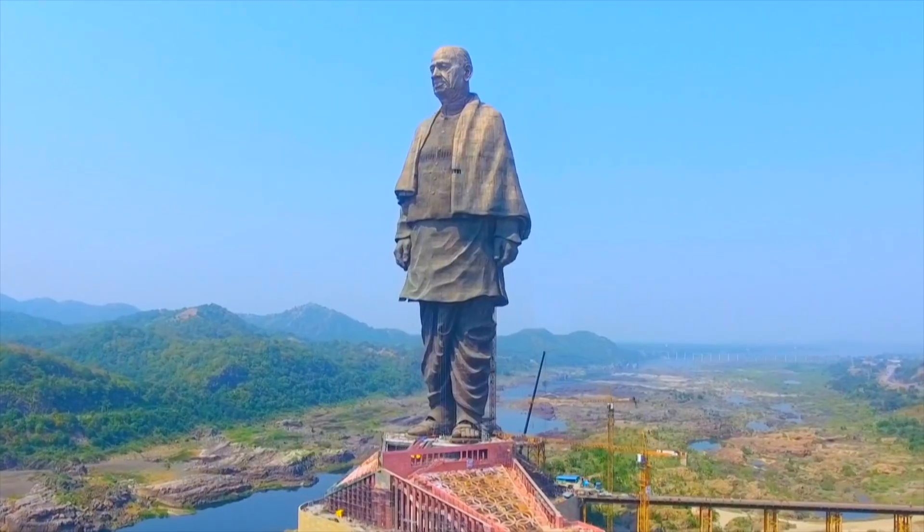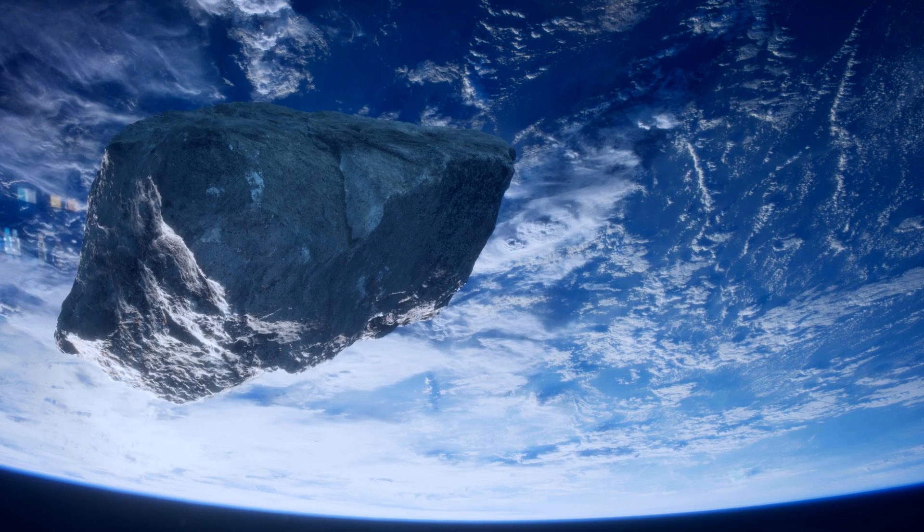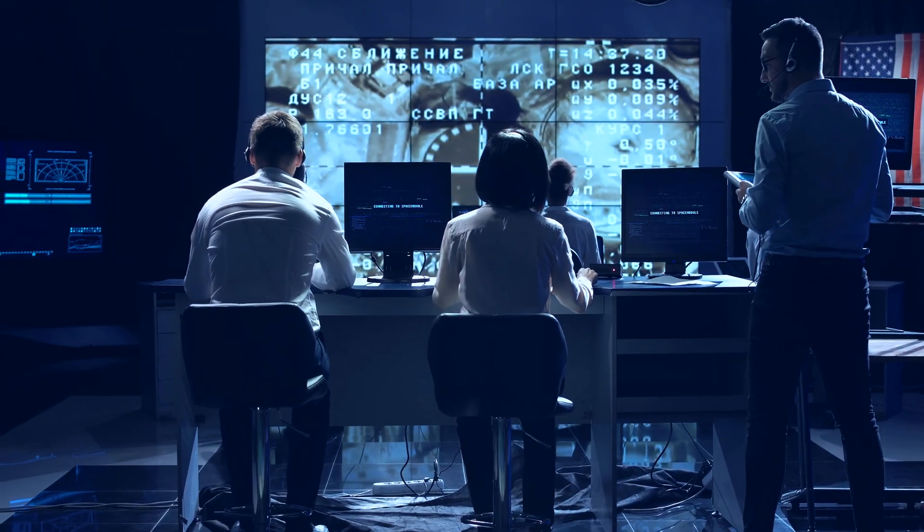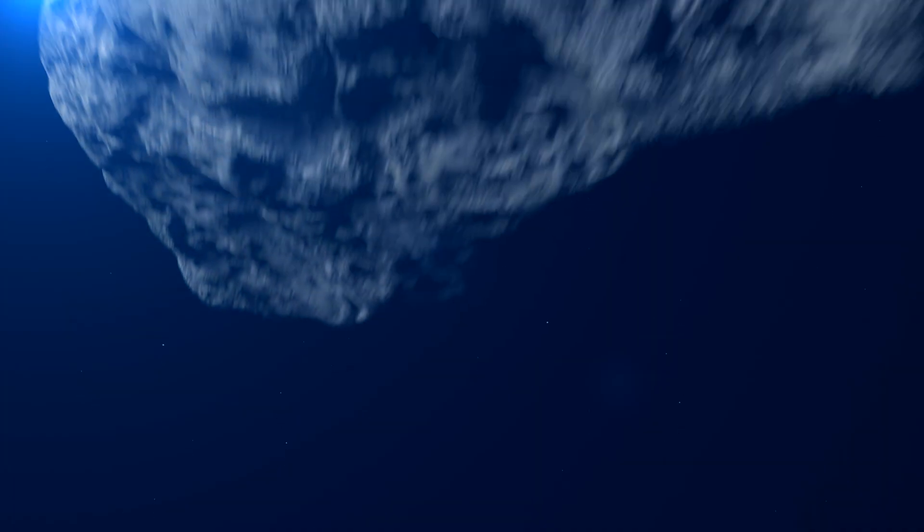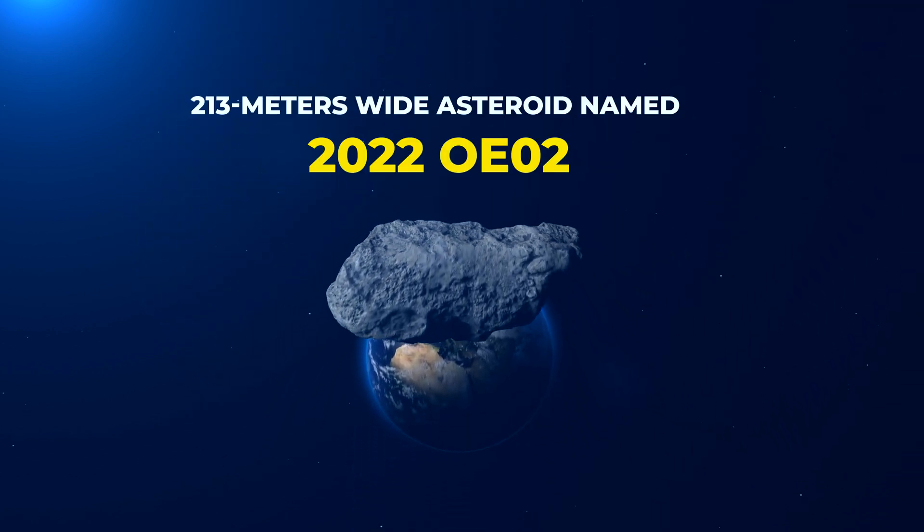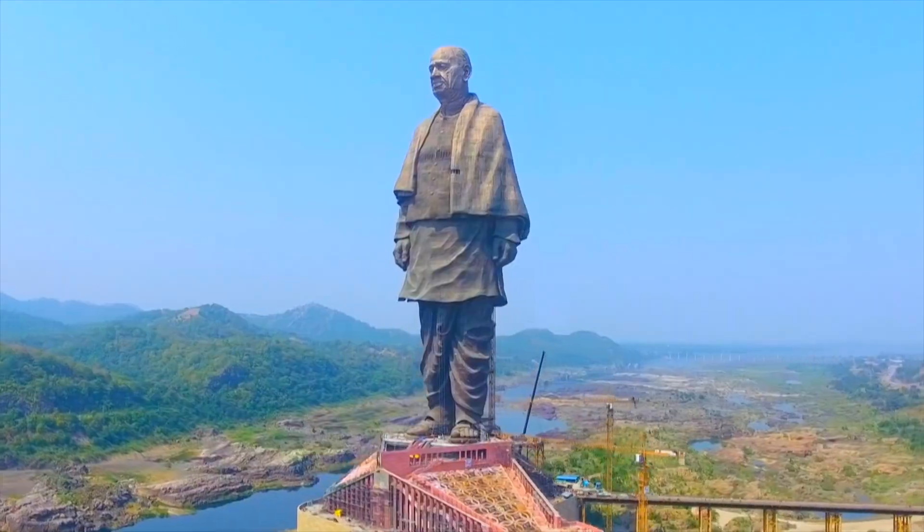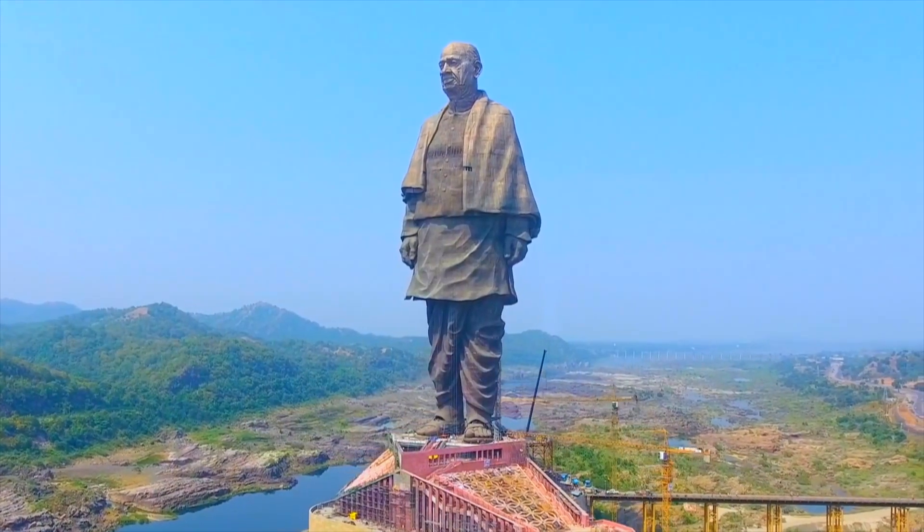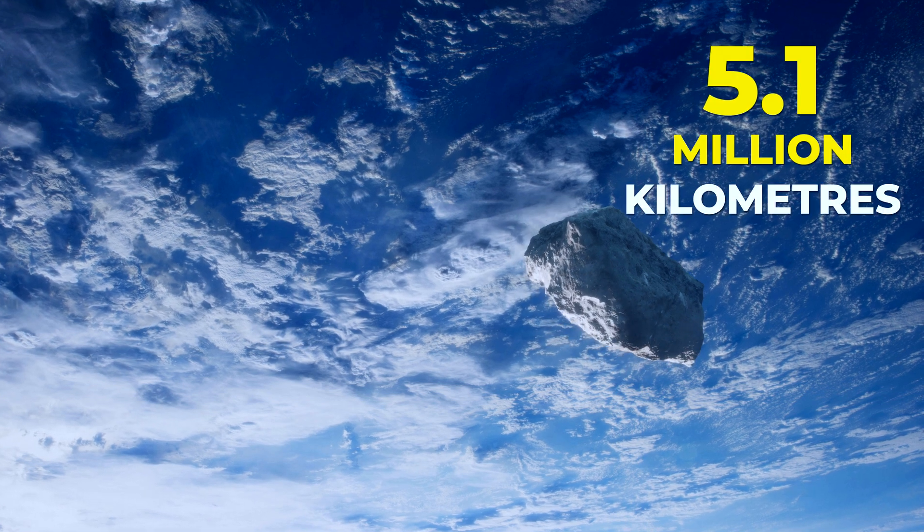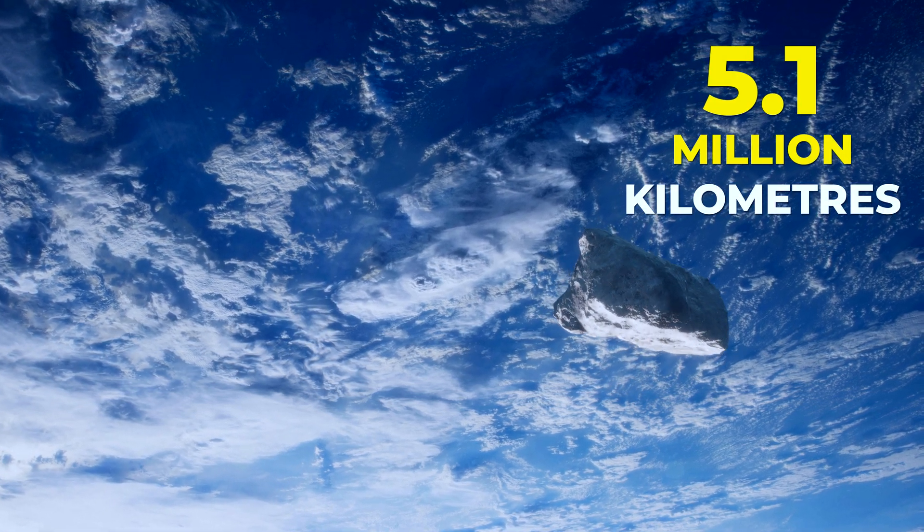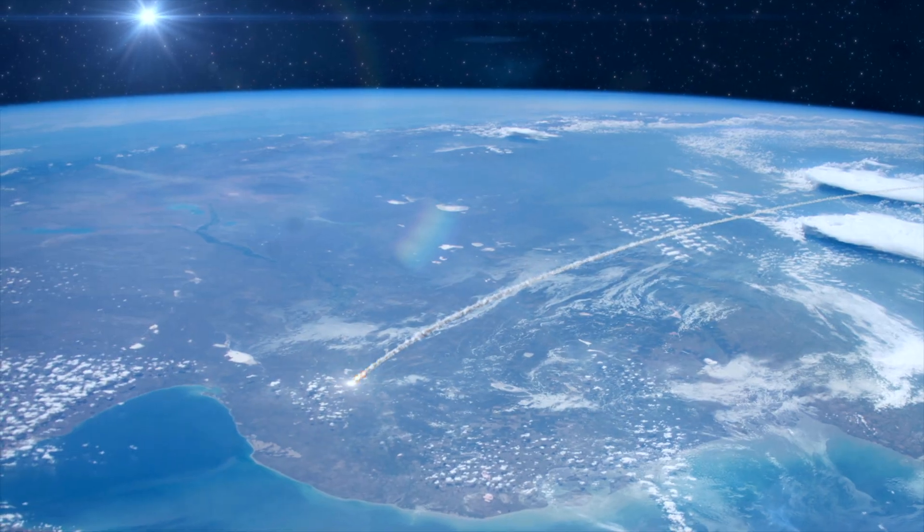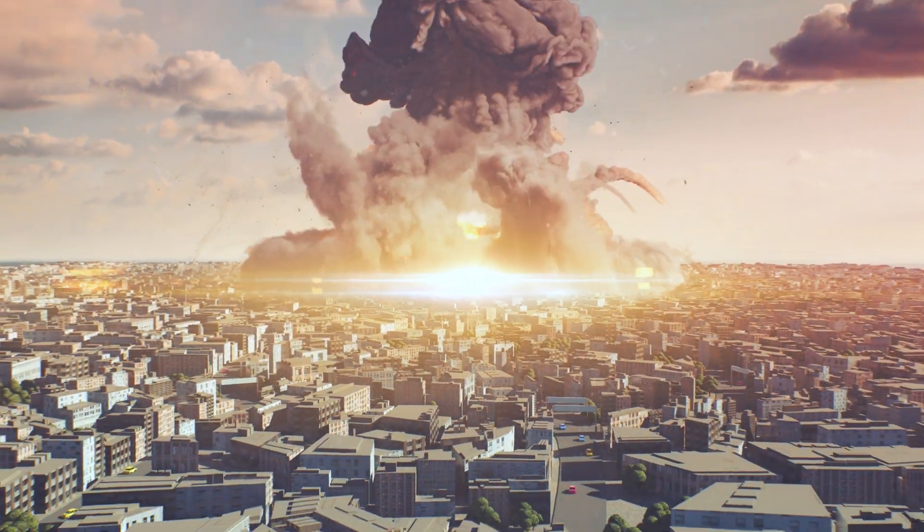An asteroid bigger than the Statue of Unity to hurtle dangerously close to Earth. A report from NASA Jet Propulsion Laboratory states that a 13-meter-wide asteroid named 2022 OE-02, larger than the Statue of Unity located in the state of Gujarat, India, is expected to come as close as 5.1 kilometers to Earth. The impact from an asteroid this large would release more energy than 1,000 nuclear bombs.